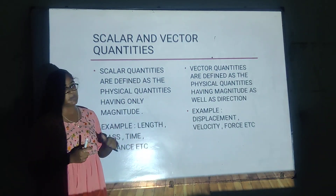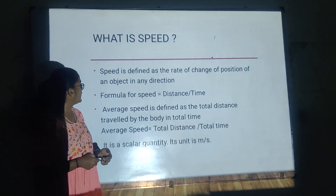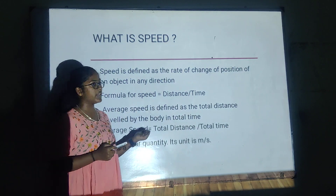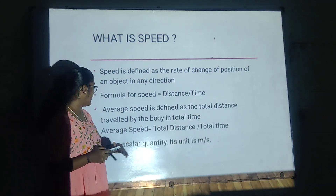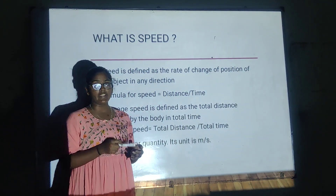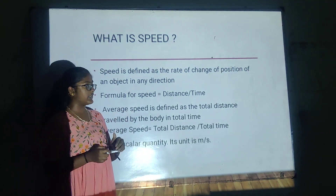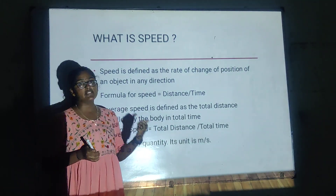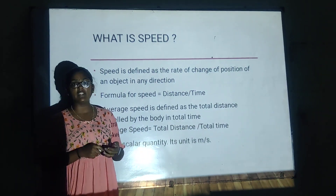About speed and velocity, you will be seeing more in upcoming slides. Speed is defined as the rate of change of position of any object in any direction. The formula for speed is distance divided by time. Average speed is defined as the total distance traveled by the body divided by total time. It is a scalar quantity since it has only magnitude, and its unit is meters per second.